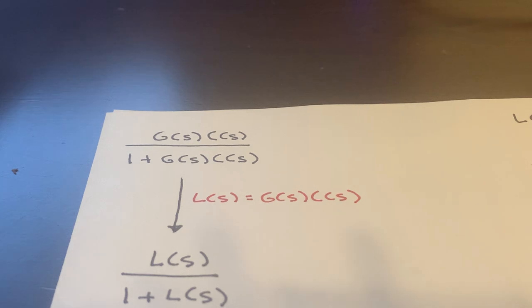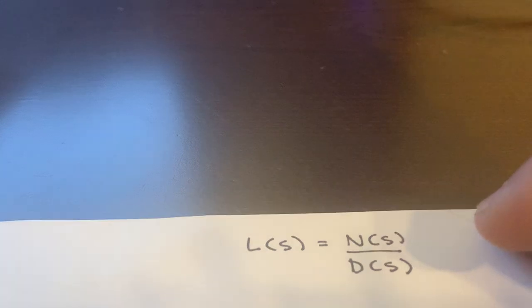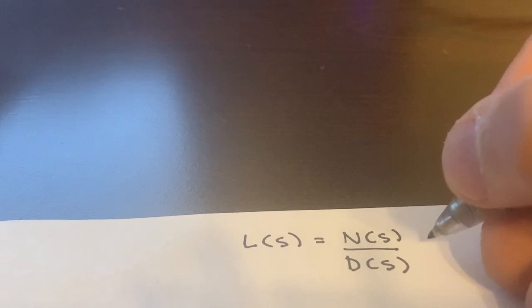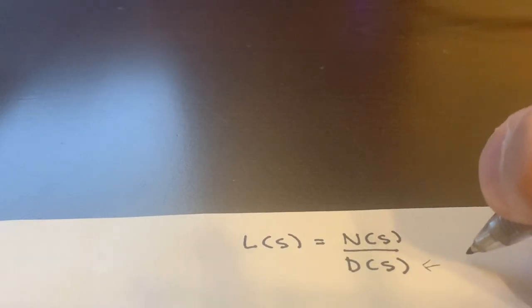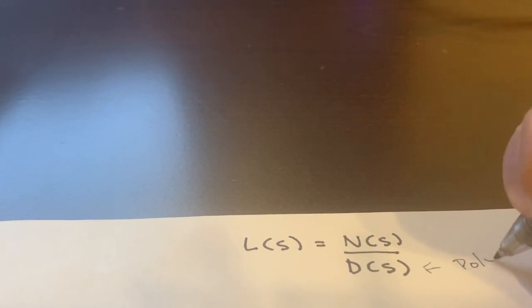So now let's imagine we want to calculate the zeros and poles for this transfer function. So I'm going to write L of S. Typically these transfer functions are basically a fraction of two polynomials. So we'll have a numerator polynomial that I denote N of S and a denominator polynomial that I'll denote D of S. And again, these are both polynomials.